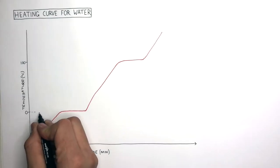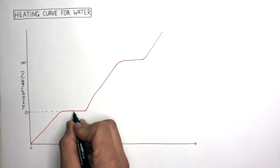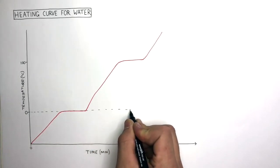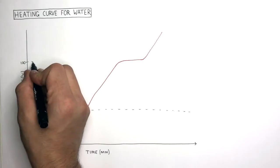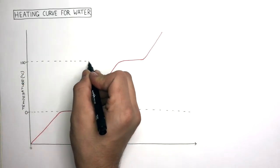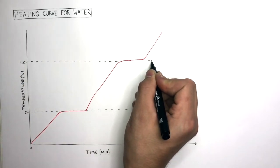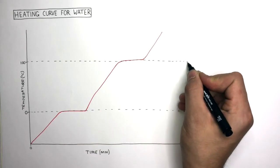This dashed line represents the melting point of ice to water, which is zero degrees Celsius, and this dashed line represents the boiling point of water to water vapor, which is 100 degrees Celsius.